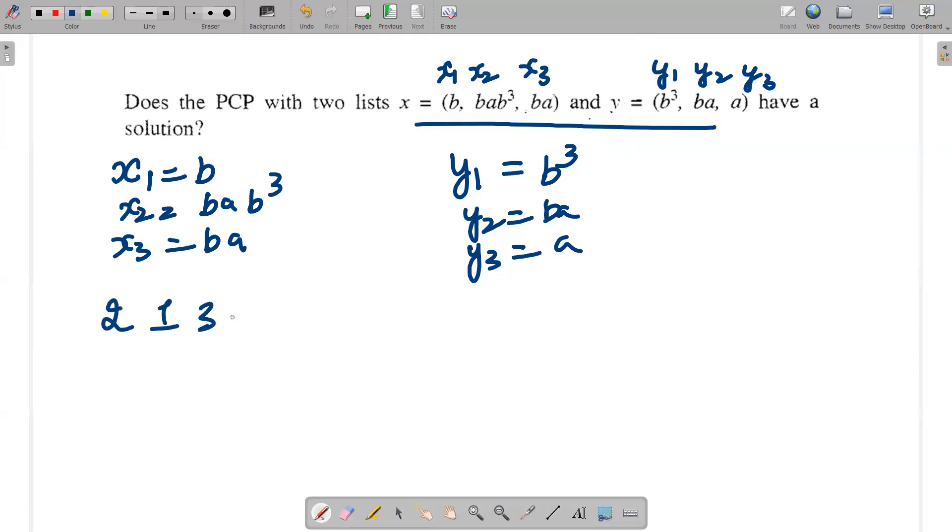Let's check pattern 2-1-3. I have to write x2, x1, x3. I've written 2-1-3 as a pattern, so I'll pick x2 first, x1 second, and x3 third. Similarly, I'll pick y2 first, y1 second, and y3 third. We will get bab³, then b, and then ba.